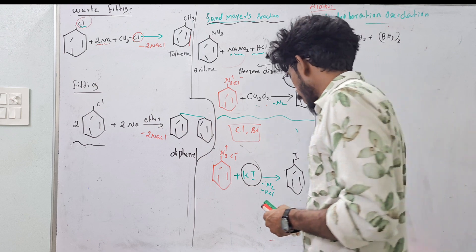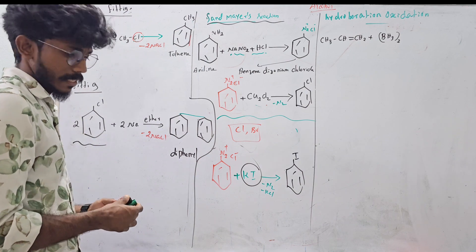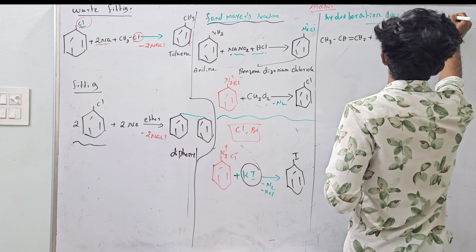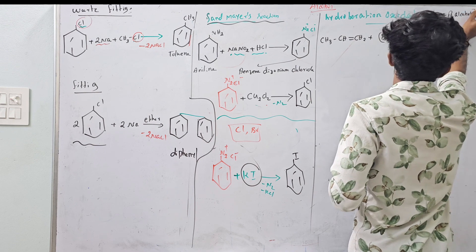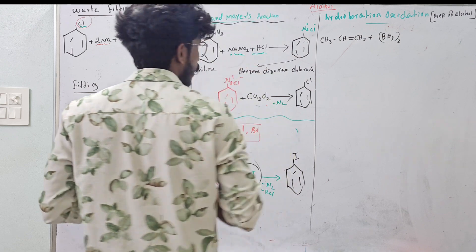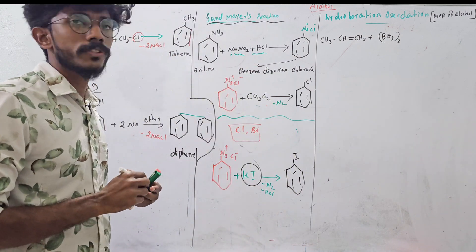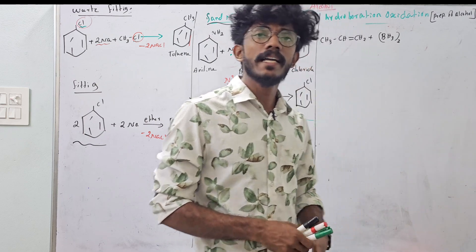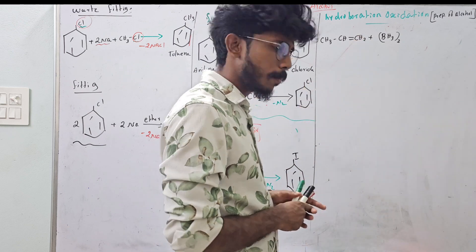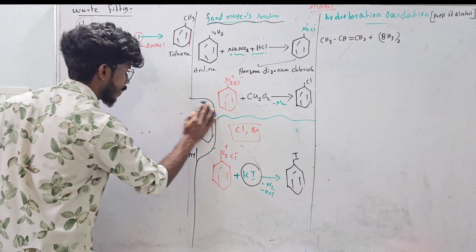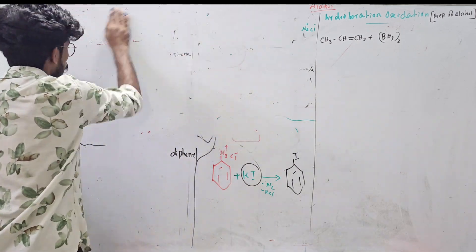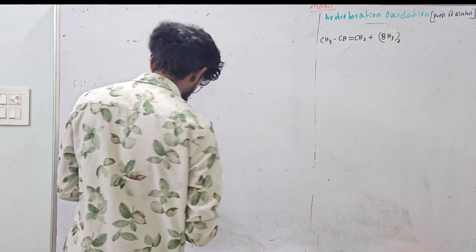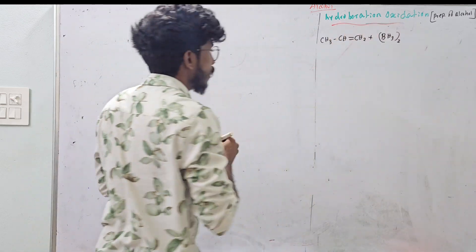Which reaction do you use to prepare alcohol? The hydroboration oxidation reaction. What do you say about the hydroboration oxidation reaction? You can use propene — CH3-CH2=CH2. Let's add this reaction.